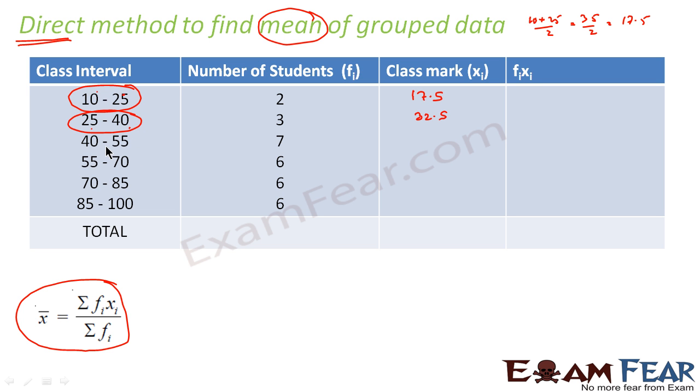In this case, 40 plus 55, that is 95 by 2, that is 47.5. Done. This guy is 55 plus 70 by 2, that comes out to be 62.5. This is done.